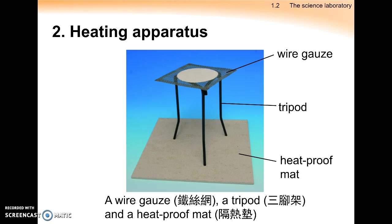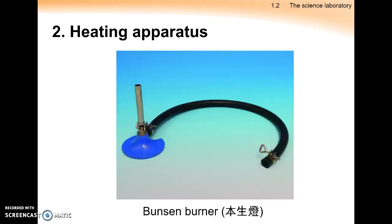For heating, we will use a Bunsen burner. But importantly, we also have to support the containers we are going to heat up, so we must have a tripod with the help of a wire gauze and a heat proof mat. The Bunsen burner is placed under the tripod.